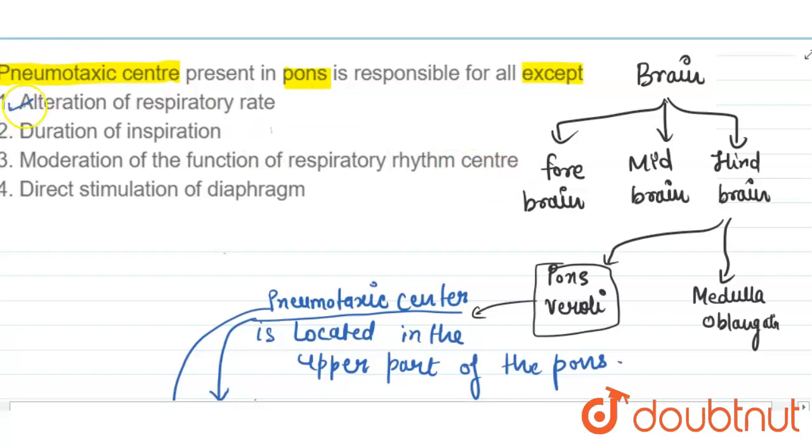Option one is correct, second is correct, third is correct. And direct stimulation of diaphragm—it does not directly stimulate the diaphragm. So this is the except part of the pneumotoxic center. Pneumotoxic center does not do direct stimulation of diaphragm. So this is your right answer.